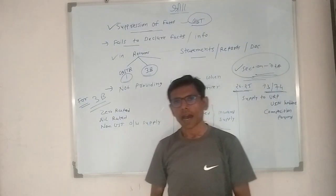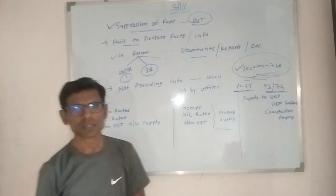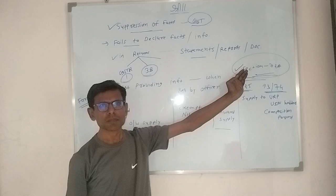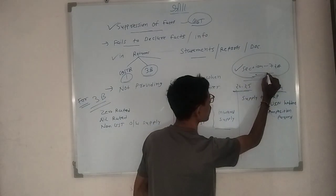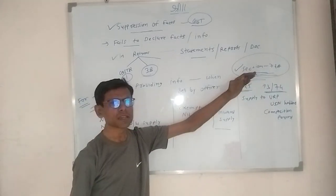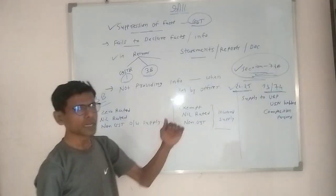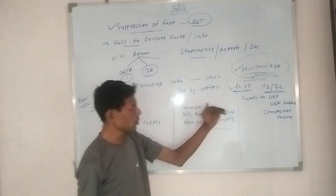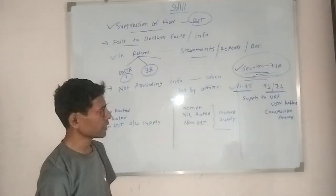Hello friends. Today we will discuss what is the meaning of suppression of fact. Via the Finance Bill No. 2 of 2024, Section 74A is introduced. Section 74A is applicable from the financial year 2024-25. Before 2024-25, this section is not applicable — before that, Section 73 and Section 74 are applicable.